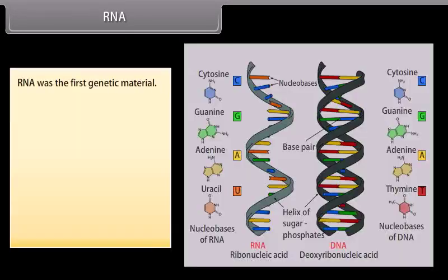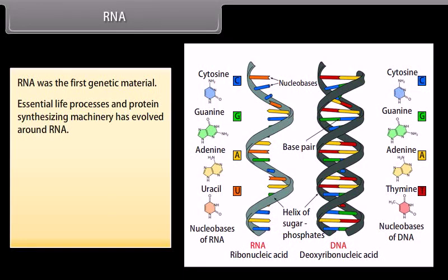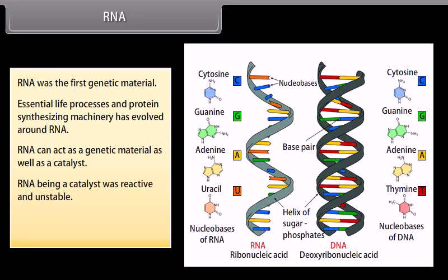RNA was the first genetic material. Essential life processes and the protein-synthesizing machinery evolved around RNA. RNA can act as a genetic material as well as a catalyst. However, RNA being a catalyst was reactive and unstable. Thus, DNA evolved as a more stable genetic material from RNA.